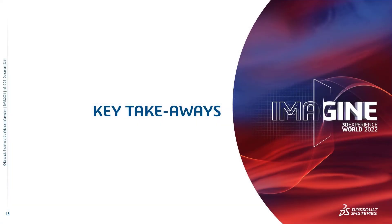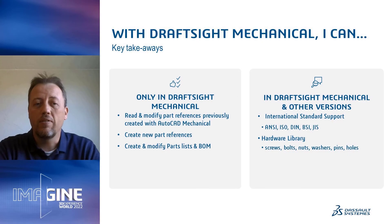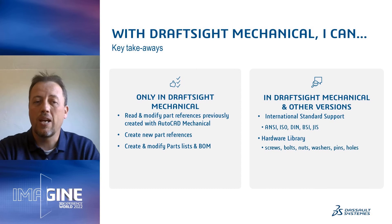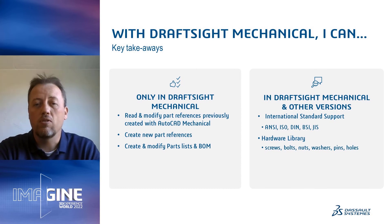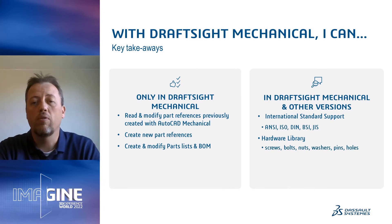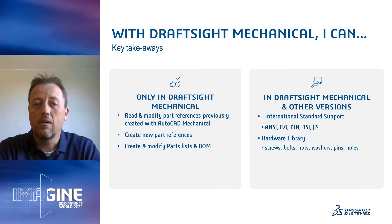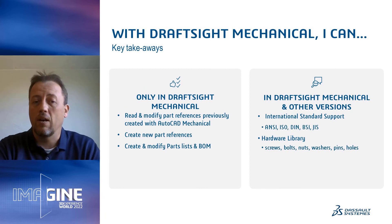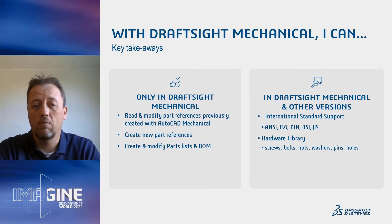To conclude, the key difference in DraftSight Mechanical is the ability to update drawings containing mechanical entities in the DWG format. To achieve this, you need support for part references and parts lists. This is particularly a must-have feature if your company has used legacy mechanical tools or Mechanical Desktop to produce mechanical drawings.